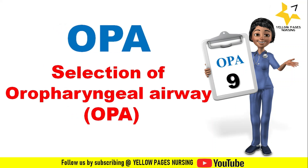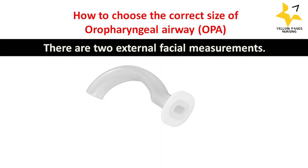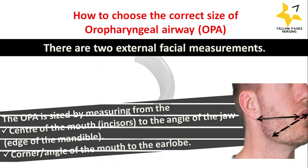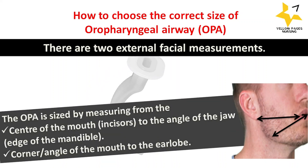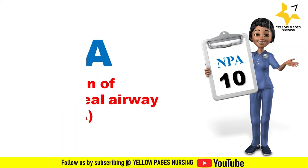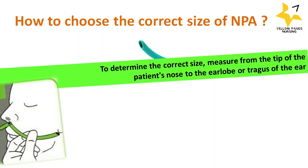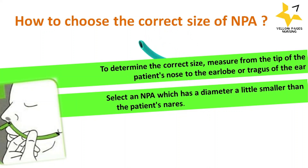Next is selection of oropharyngeal airway (OPA). The OPA is sized by measuring from the center of the mouth to the angle of the jaw (edge of mandible), or from the corner of the mouth to the earlobe. For nasopharyngeal airway (NPA), measure from the tip of the patient's nose to the earlobe or tragus of the ear, and select an NPA with a diameter slightly smaller than the patient's nostril.